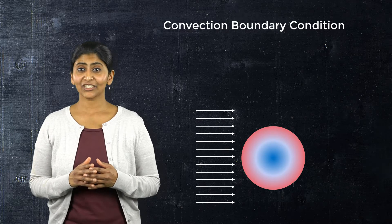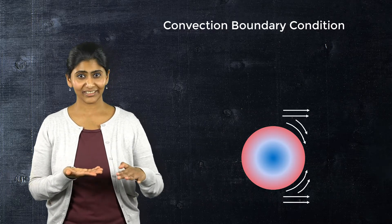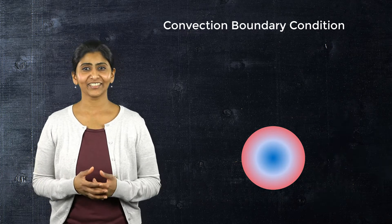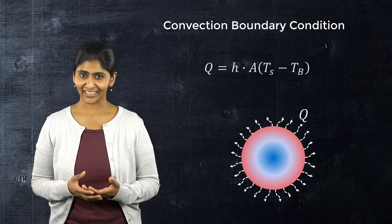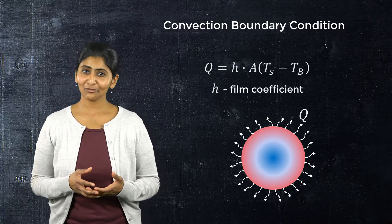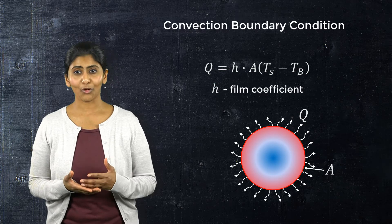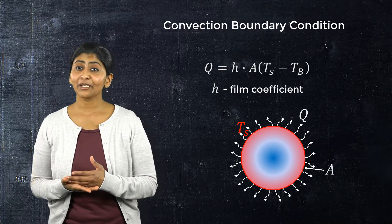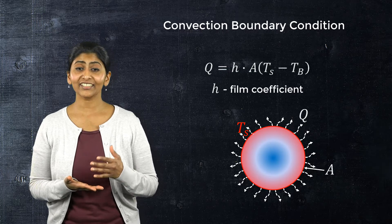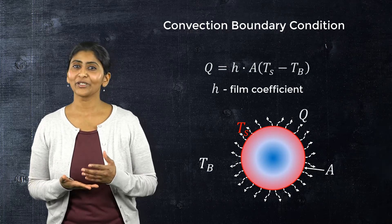The convective heat transfer rate for a body having fluid flowing over its surface is given by this formula, where Q is the heat transfer rate, H is the film coefficient, A is the surface area of the body in contact with the fluid, T_S is the temperature of the body surface in contact with the fluid, and T_B is the bulk fluid temperature.